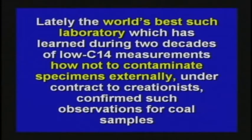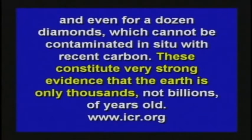The world's best such laboratory, which has learned during two decades of low C-14 measurements how not to contaminate specimens externally, under contract to creationists confirmed such observations for coal samples and even for a dozen diamonds. The textbooks will tell you coal formed 250 million years ago in the Carboniferous Era. And yet when they test coal, it still has carbon-14. If all the carbon-14 atoms would have disappeared in 30,000 to 50,000 years, why would there still be carbon-14 atoms in coal?